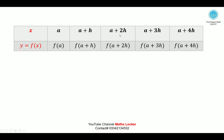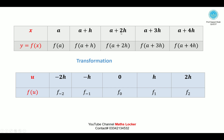We are seeking the center for the transformation. Here, a+2h is the center. Subtracting a+2h from a+2h gives 0. Then a+3h minus a+2h gives h, and a+4h minus a+2h gives 2h.